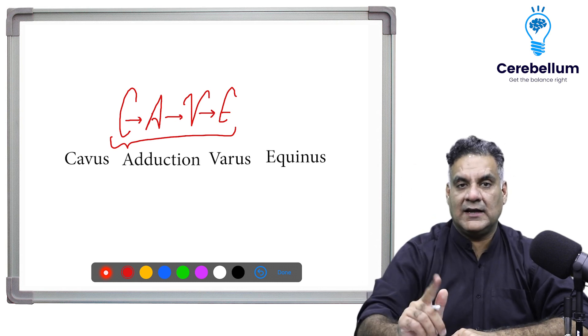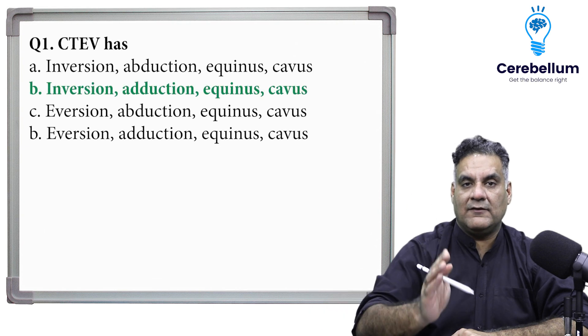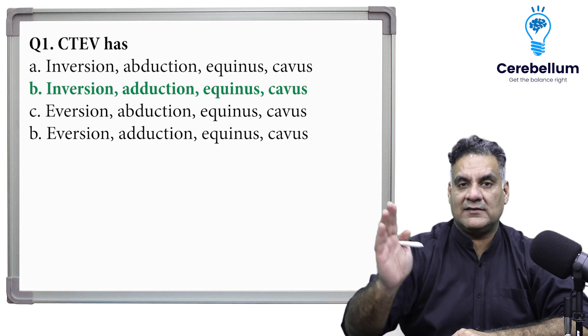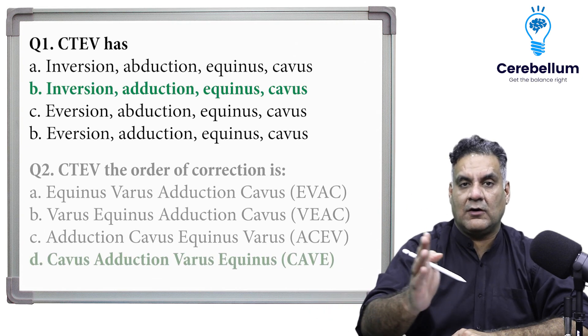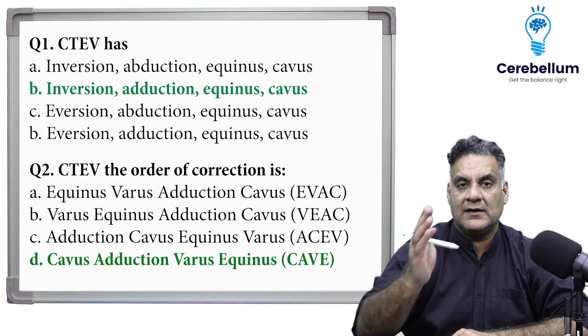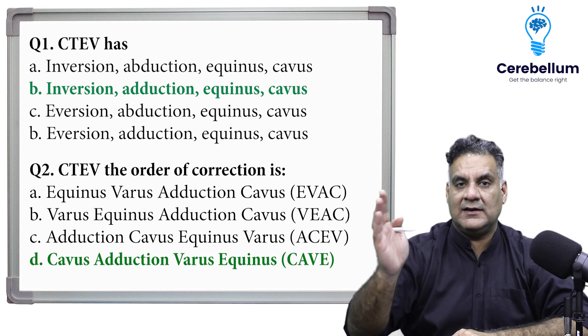Number one: what are the four components? Cavus, adduction, varus, equinus. Number two: what is the order of correction? C, then A, then V, then E.